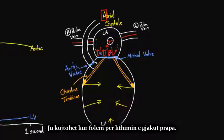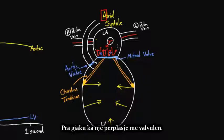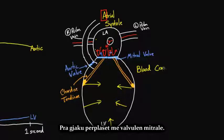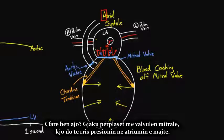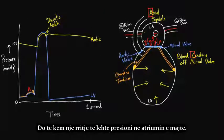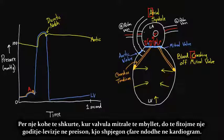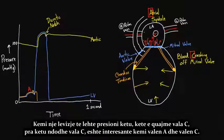What really happens, interestingly, is that because the contraction happens so quickly, there's blood that's actually snapping back — just like in the dicrotic notch, we talked about snap-back of blood. You could think of it as blood crashing off that mitral valve. So now there's blood crashing off the mitral valve, and that's going to increase pressure in the left atrium — a little bit of increased pressure. So for a short time, right when the mitral valve is closing, you get a little bump in pressure. We call that the C wave.